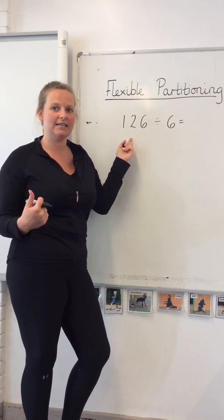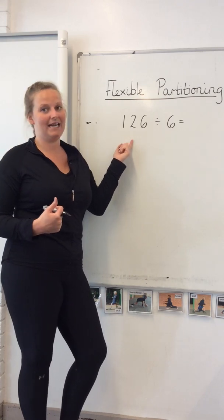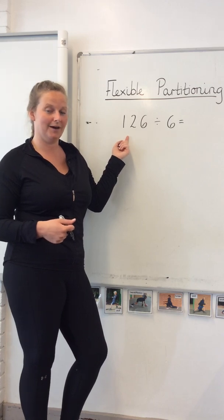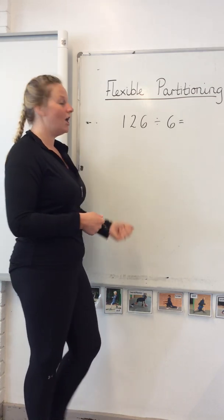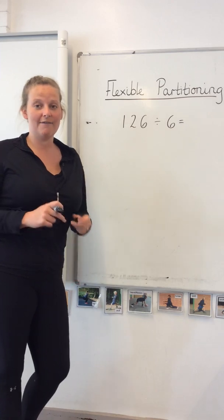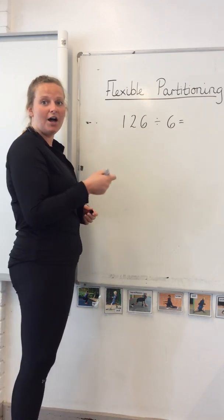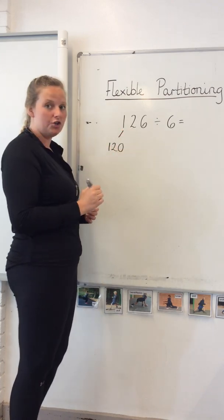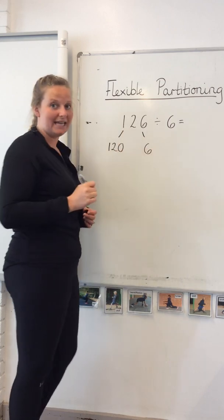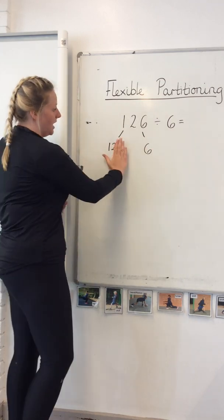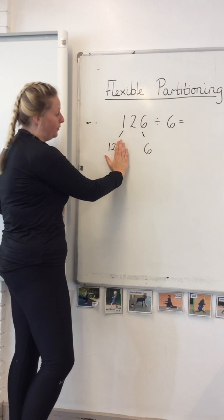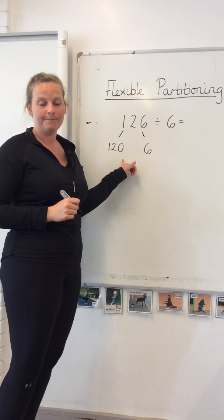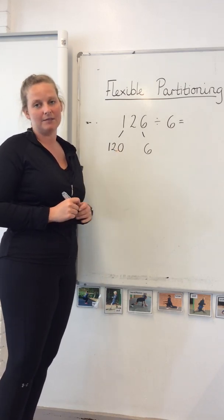Now I know my 6 times table, so I can see another multiple of 6 in my three-digit number. Can you spot it before I partition this number? I know I can partition my number into 120 and 6 because I know that 12 is in the 6 times table. Then I can divide 120 by 10, find out my answer, and then times my answer by 10 again.